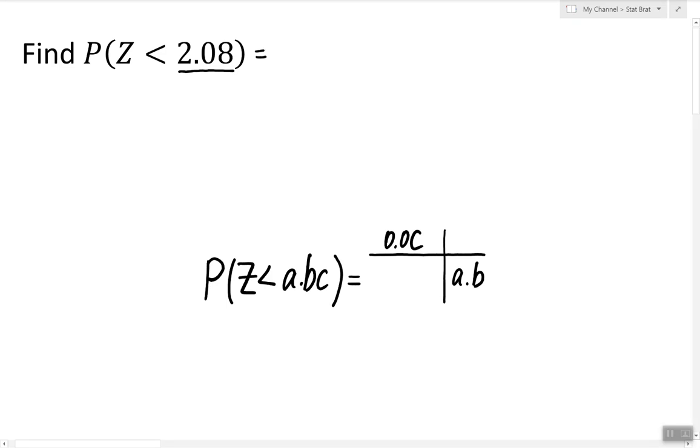we're simply going to look in the z table and find the row 2.0 and the column 0.08. And if you look at the z table and you look for this row and this column,